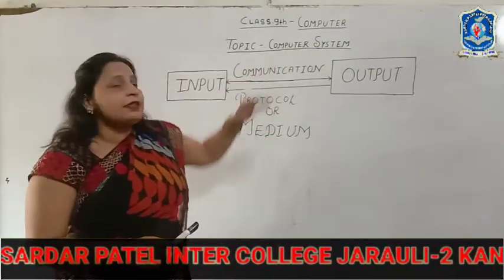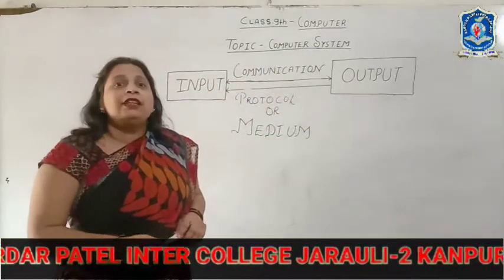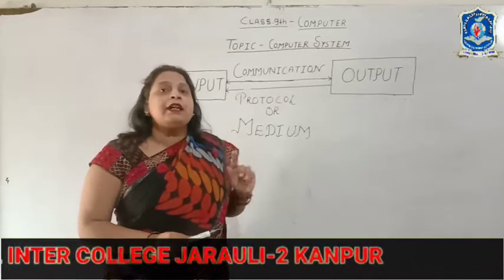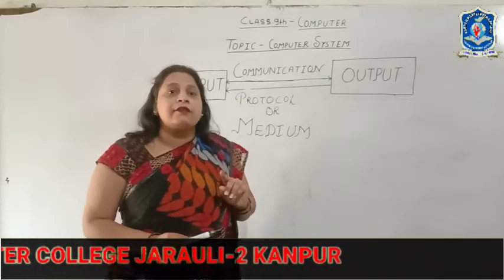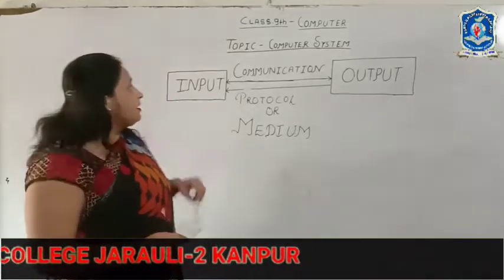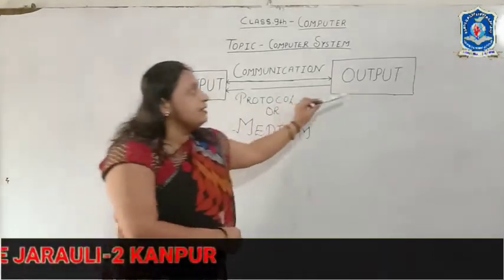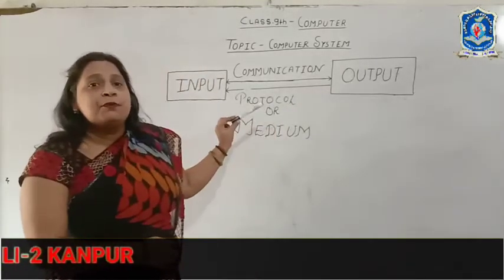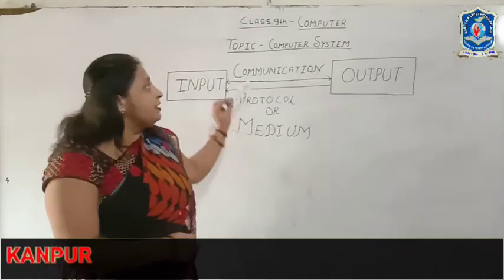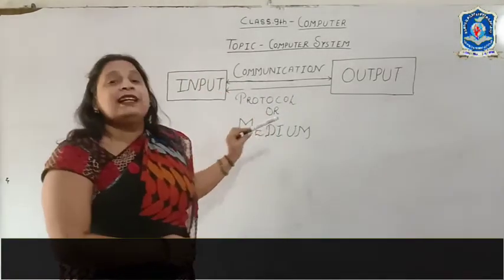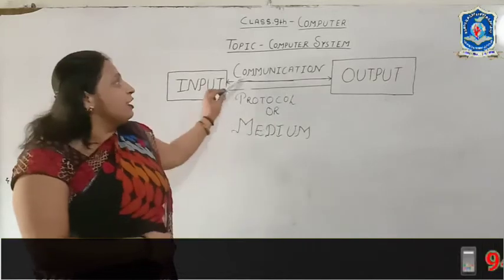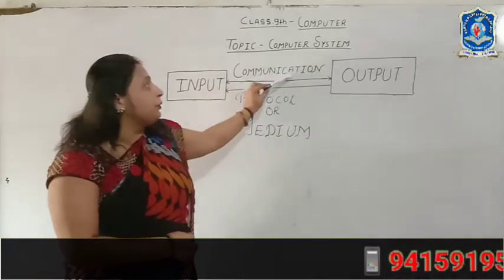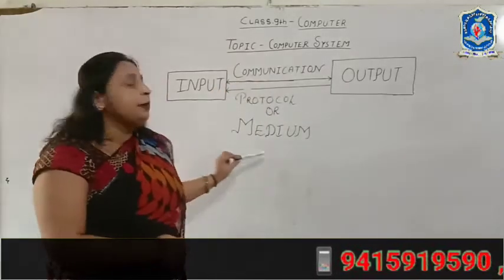In a computer system there are three main parts. First is input, second is output, and third, the most important part, is communication protocol — otherwise you may call it communication medium.